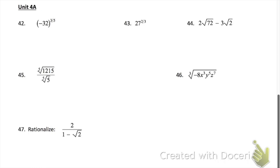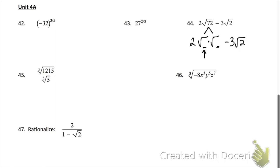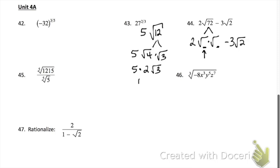Problem 47 — the only way you can add or subtract radicals is if the indices are the same, and the square root of 72 and the square root of 2 are not the same. So you're going to have to simplify the square root of 72 by finding the biggest perfect square that divides 72. For example, to simplify the square root of 12: the biggest perfect square that divides 12 is 4, and 4 times 3 is 12, so you get 2 times the square root of 3. If you had a 5 out front, it would be 10 times the square root of 3.